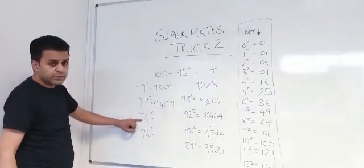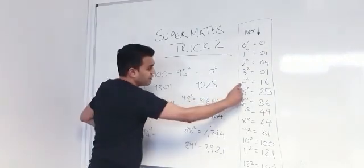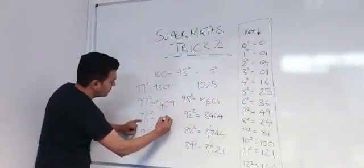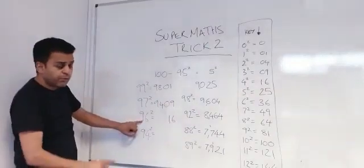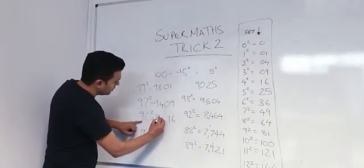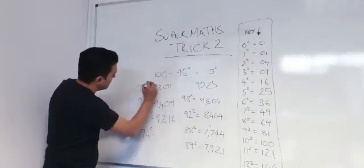How close is 96 to 100? It's 4. 4 times 4 is 16, so you've got 16 there. Take away 4 from that number, from 96, you've got 92.